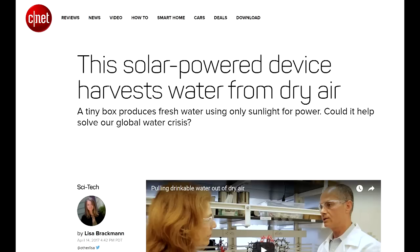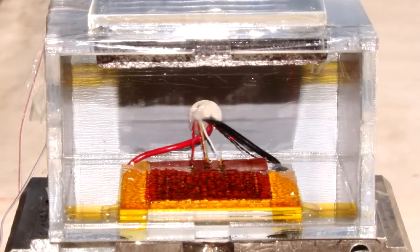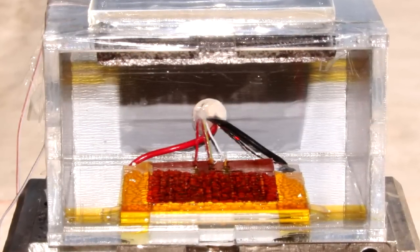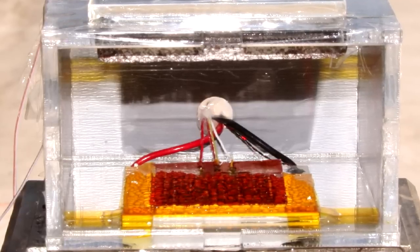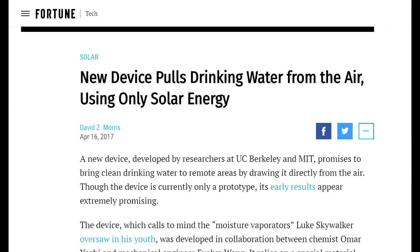CNET by SciTech, Lisa Brachman. This solar-powered device harvests water from dry air. This tiny box produces fresh water using only sunlight for power. Could it help solve our global water crisis? Fortune Tech, David Morris. New device pulls drinking water from the air using only solar energy.